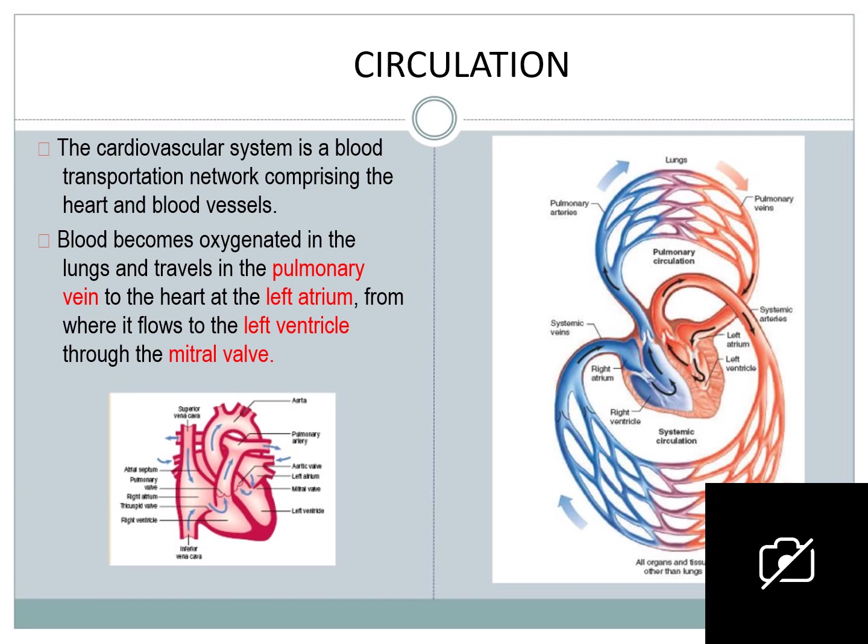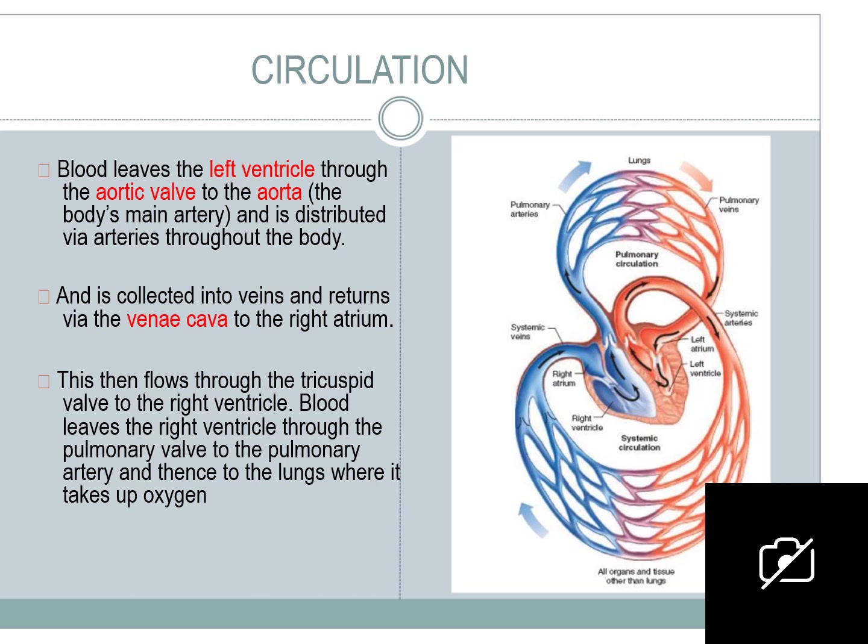This is a simple circulatory diagram showing how the blood is circulated, just for refreshing your mind. The cardiovascular system is a blood transportation network comprising the heart and blood vessels. Blood becomes oxygenated in the lungs and travels in the pulmonary vein to the heart at the left atrium, from where it flows to the left ventricle through the mitral valve. The blood in the artery is oxygenated blood.